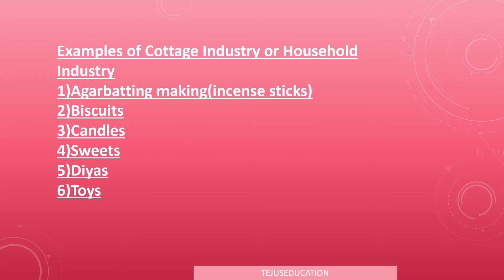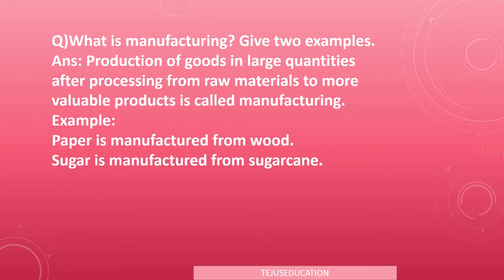Examples of cottage industries include agarbatti (incense stick) making, biscuits, candles, sweets, and small toys. The questions discussed in this chapter are very important from the exam point of view. Try to learn and practice by writing, or learn by heart — whichever is easy for you — but you should be able to retain it.